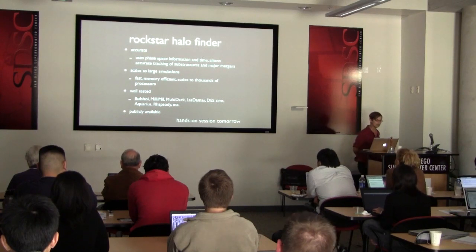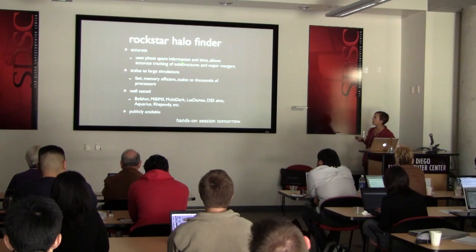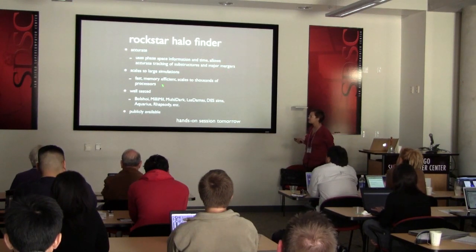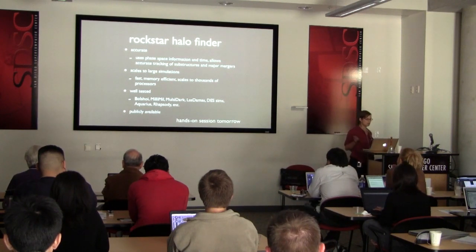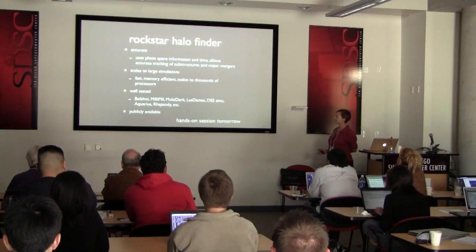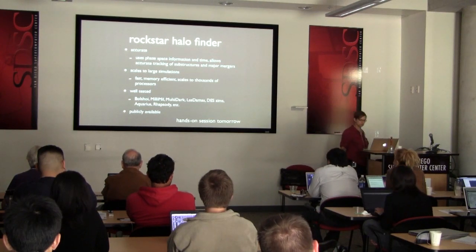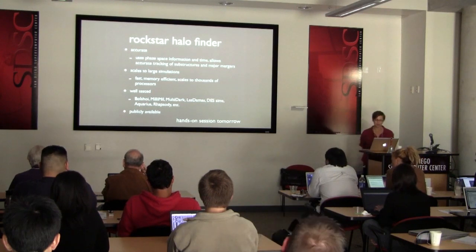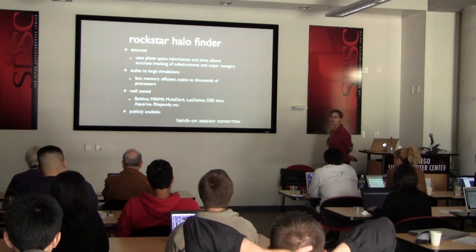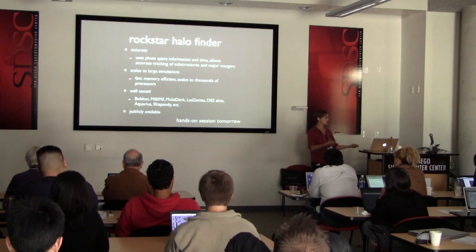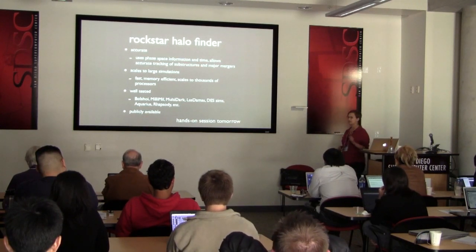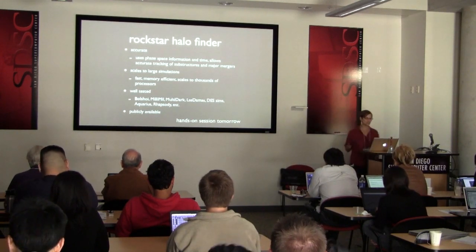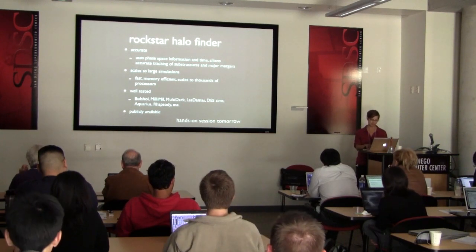A few more words about this halo finder: it's very accurate, uses phase space information and time, so has very accurate tracking of substructures and major mergers. It scales to very large simulations — it's fast, memory efficient, and can run on thousands of processors. It's been run on Bolshoi, last week on the Millennium, multi-dark, the Las Damas simulations, and also on very high resolution re-simulations like Aquarius and Rhapsody. Peter will go over this with you tomorrow, and one interesting thing will be comparing the output of this code with other codes. You can play around with defining halos — there was a nice paper today showing that our definitions of halos are all wrong. Lots of interesting things to do in the hands-on session tomorrow.